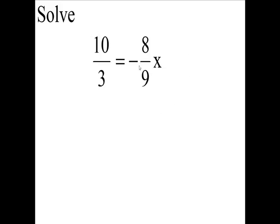All right, I have two fractions, and my variable's on the right side this time. We still have to identify the variable, which is the x. The coefficient of that is a negative 8 ninths.